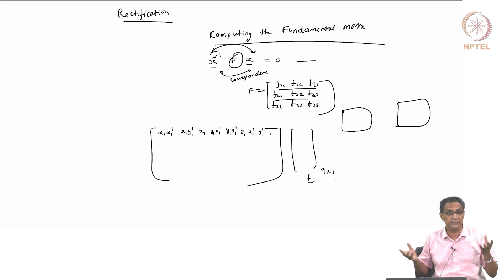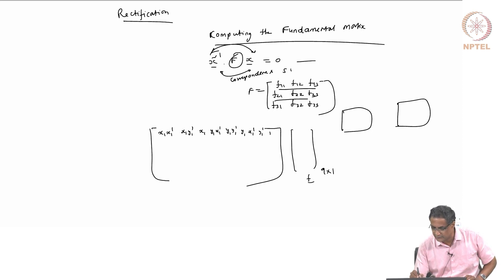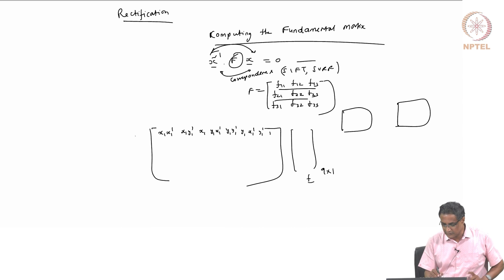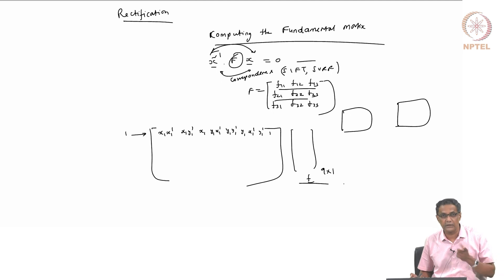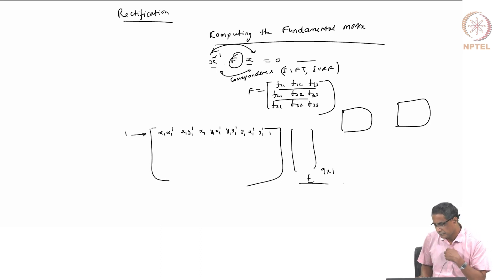These correspondences have to come from something like SIFT or SURF, because we do not know the epipolar lines yet — we do not know where the epipolar line is because we do not know F. So these point correspondences must come from feature matching methods like SIFT or SURF. One point correspondence gives me one equation of this kind, and I have 9 unknowns. But we know F actually has only 7 unknowns — it is rank 2 and can only be found up to a scale factor.